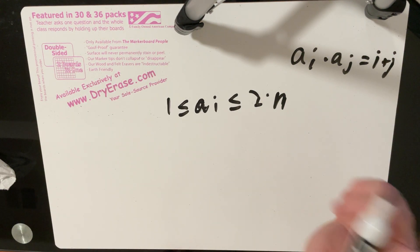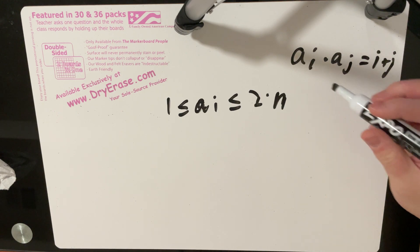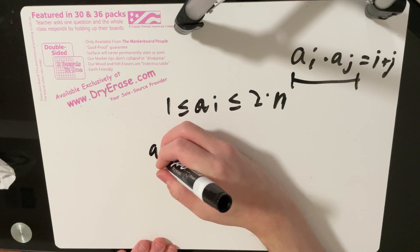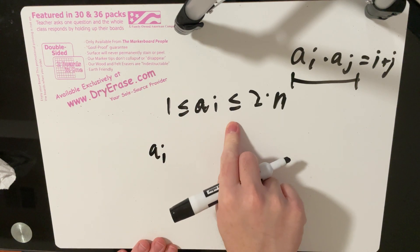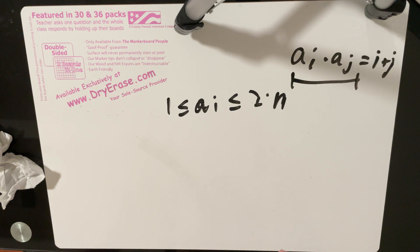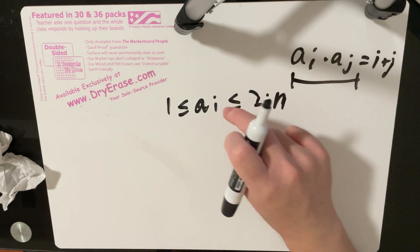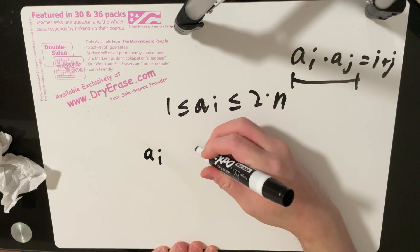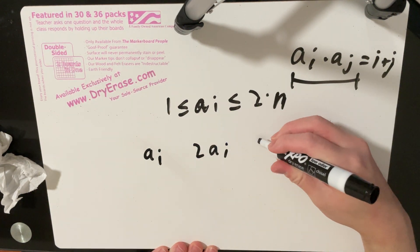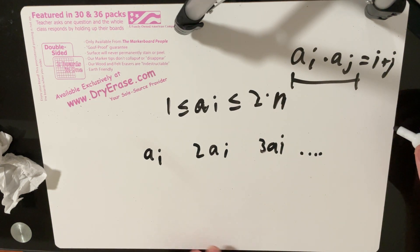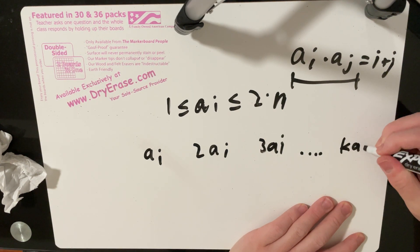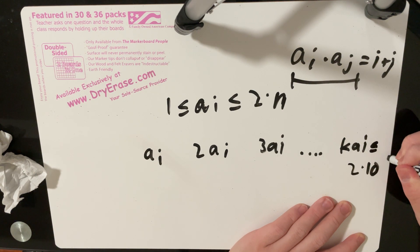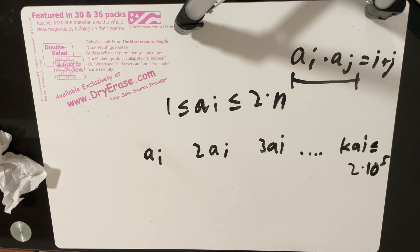So here's the important thing. We can represent rather than looping over these aj values, we can loop over this entire product over here. So for every ai that we consider, we loop over all numbers that have ai as a divisor. So for example, you can first check ai itself, and then we can check 2 times ai, and then we can check 3 times ai, and so on, all the way until we get to k times ai, where k is the largest number such that this is still less than or equal to 2 times 10 to the 5.